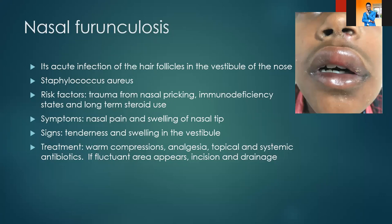Other risk factors include immunodeficiency states such as HIV, diabetes, and patients on long-term steroid use. Symptoms include nasal pain; a patient will say they have pain along the nasal alae and swelling in the nasal tip. The furuncle is found on the floor, lateral wall, or roof of the vestibule. Furuncles rarely form on the septum because we do not have hair follicles there.